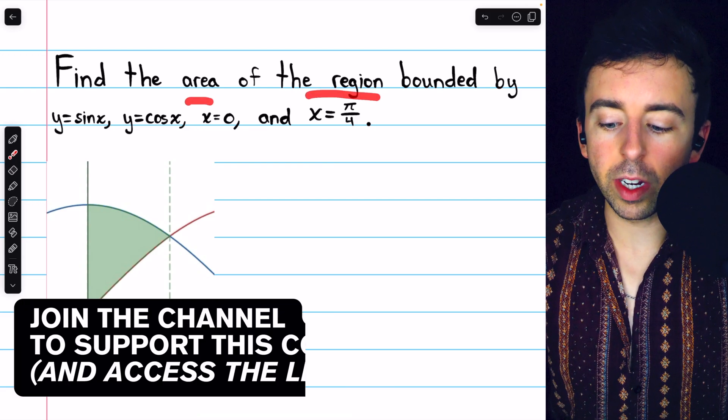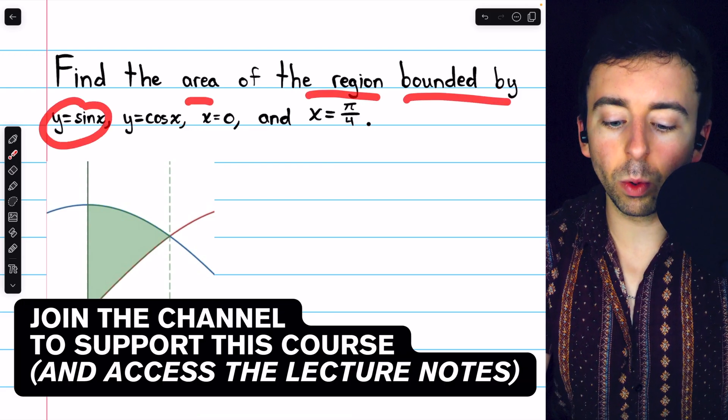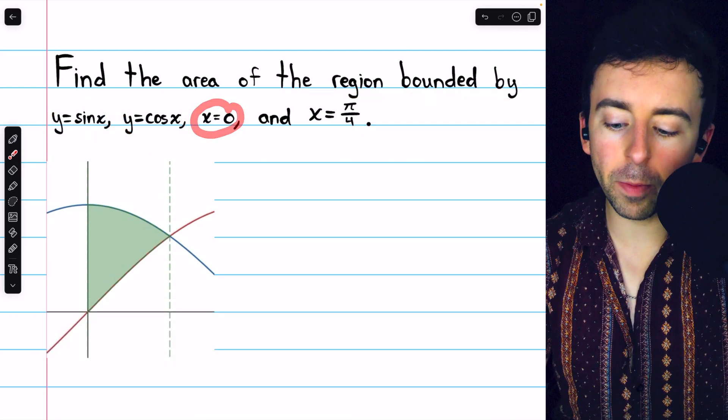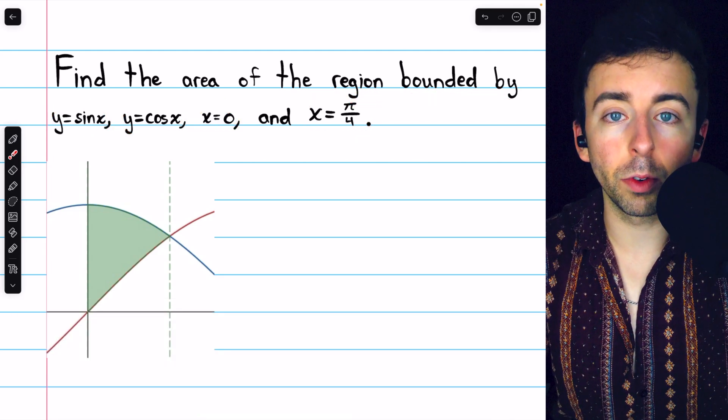Let's find the area of the region bounded by y equals sine x, y equals cosine x, x equals zero, and x equals pi over four.